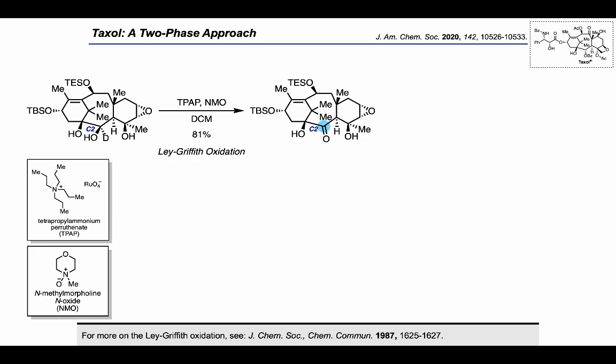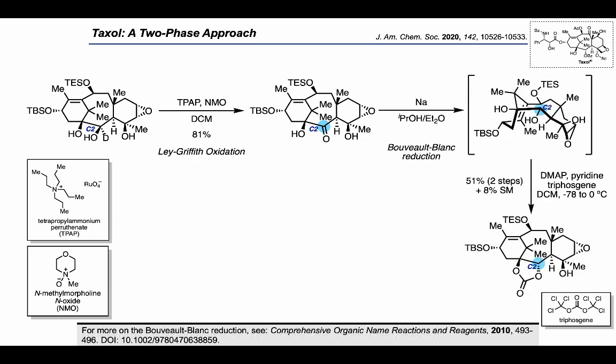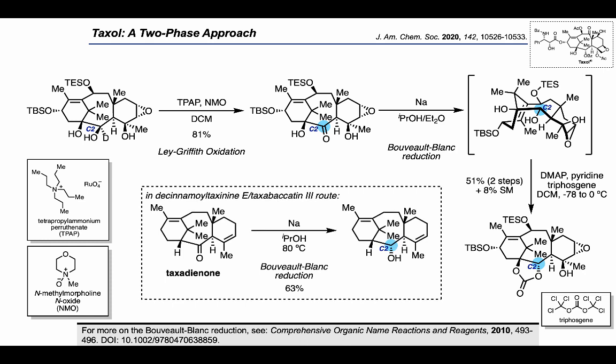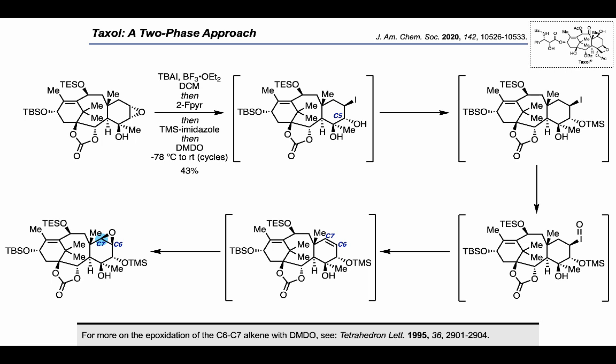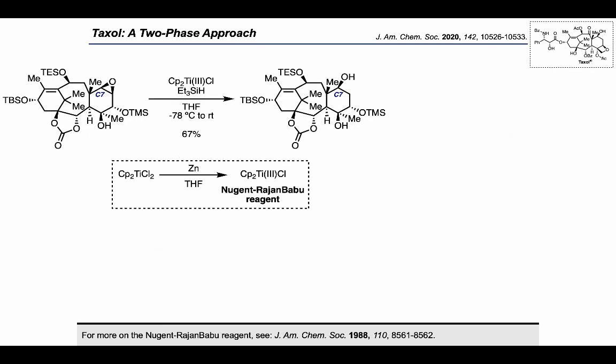A Ley-Griffith oxidation was used to convert the secondary alcohol at C2 back to the ketone, which could then be reduced using a Bouveault-Blanc reduction to form the C2 alcohol with the desired stereochemistry, after which it could be tied up with the tertiary alcohol to form a cyclic carbonate — reminding us of the stereochemical outcome observed with taxadienone. The authors then treated with tetrabutylammonium iodide and ethereal BF3, resulting in regioselective epoxide opening with the iodide nucleophile. 2,4-Lutidine was used to deactivate residual BF3 before protecting the secondary alcohol with TMS imidazole. DMDO was used to oxidize the iodine and trigger a syn-elimination; a subsequent epoxidation on the alkene delivered the epoxide product bearing a key carbon-oxygen bond at C7. To take advantage of the newly formed epoxide and generate a secondary alcohol at C7, the authors treated with the Nugent-RajanBabu reagent formed from titanocene dichloride and zinc, resulting in reductive cleavage of the epoxide.